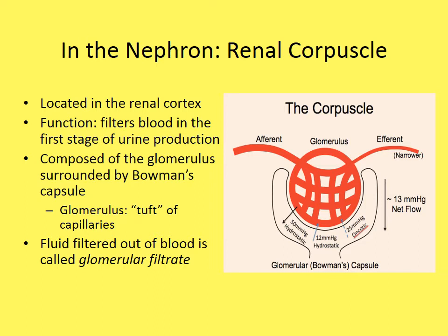The renal corpuscle is composed of two structures: the glomerulus and the Bowman's capsule. The glomerulus is a cluster of capillaries surrounded by the Bowman's capsule. Fluid filtered out of the blood is called the glomerular filtrate — it gets secreted out of the capillaries into the Bowman's capsule to be carried further into the nephron.